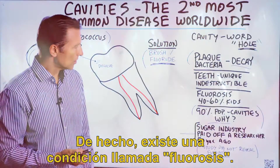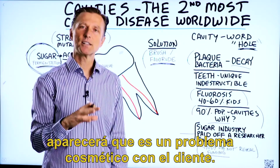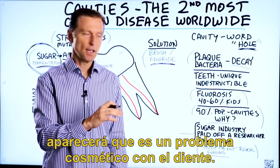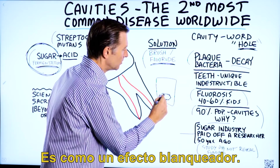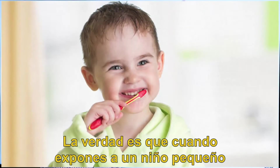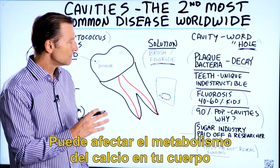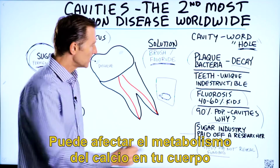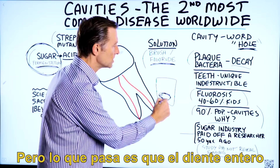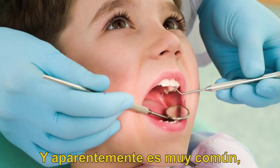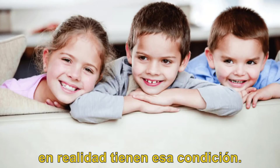In fact, there's a condition called fluorosis. If you look it up, it'll say it's a cosmetic problem with the tooth — part of the tooth turns excessively white, like a bleaching effect. The truth is that when you expose a young child to too much fluoride, it can weaken the teeth. It can affect calcium metabolism in your body and give this appearance. The whole tooth becomes weak itself, and apparently it's very common — 40 to 60% of children actually have that condition.